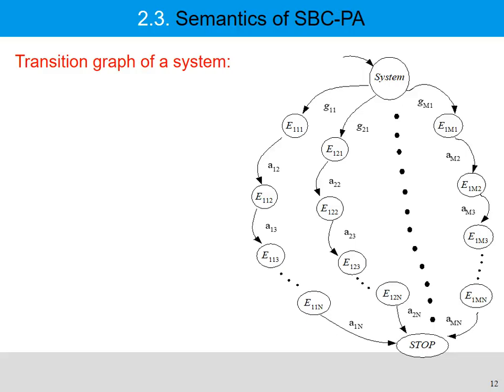We use a transition graph to describe the semantics of a system, as shown in this figure. The system is in initial state and it transitions to state E11 with the integration a11.